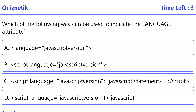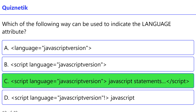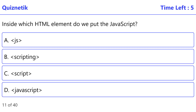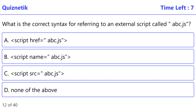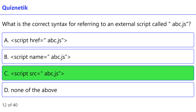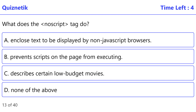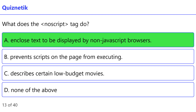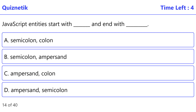Which of the following ways can be used to indicate the language attribute? Correct option is C: script language equals javascript version. Inside which HTML element do we put the JavaScript? Correct option is C: script. What is the correct syntax for referring to an external script called abc.js? Correct option is C: script src equals abc.js. What does the noscript tag do? Correct option is A: encloses text to be displayed by non-JavaScript browsers.